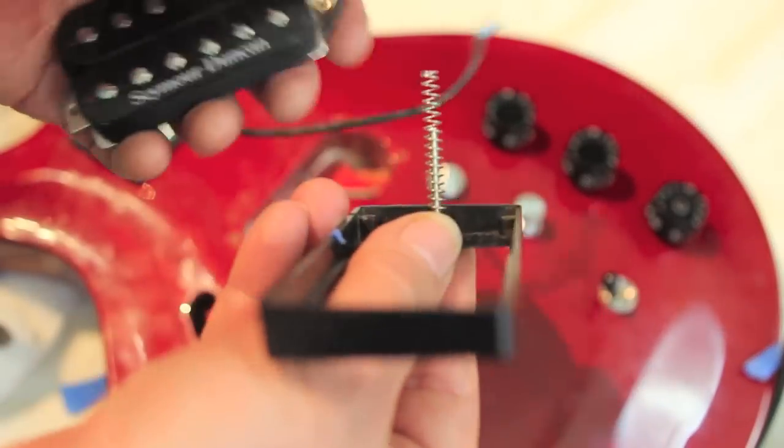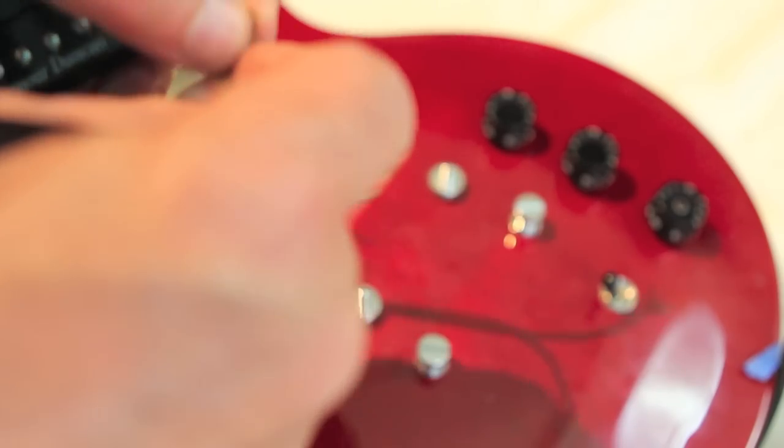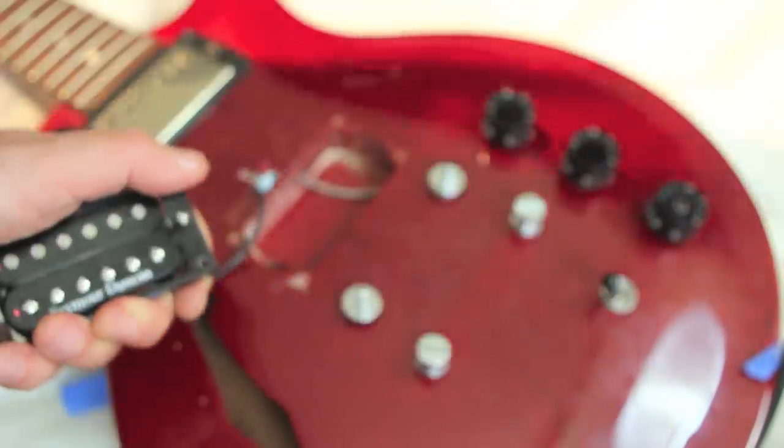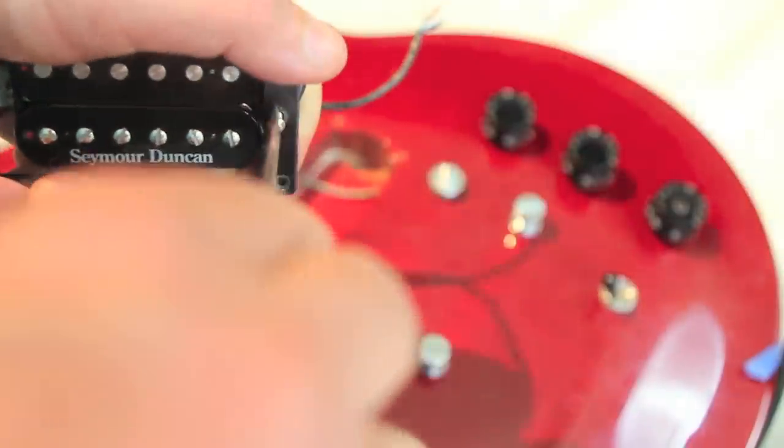Now use your fingertips to compress the spring exposing the bare end of the screw. Position the new pickup's bracket over the screw and hold it in place and then screw it in. The exact amount you screw it in doesn't really matter, we'll be adjusting it later, just enough to hold everything together for now.